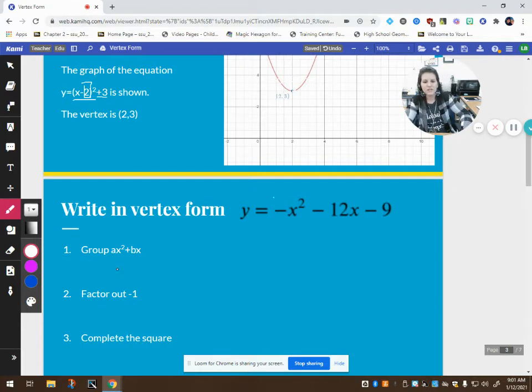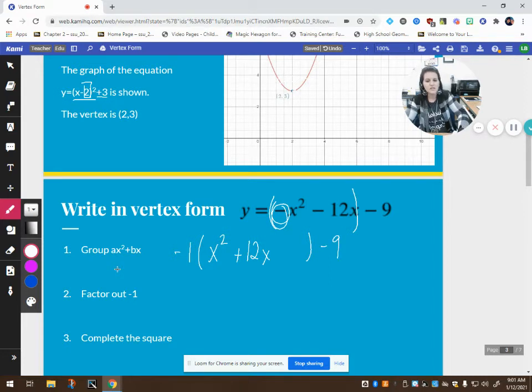How do we go about converting something into vertex form? The first thing we have to do is group the ax squared plus bx, and then we zero in on this leading coefficient of the x squared term. If it's anything other than a positive 1, we have to factor it out. So since this is a negative 1, we factor that negative 1 out. I'm going to have negative 1 times x squared. Since I pulled out a negative 1, I'm left with positive 12x. I'm going to leave some space here and then minus 9. Think of this as an unfinished puzzle. We've got to complete it.